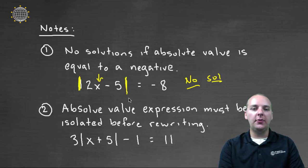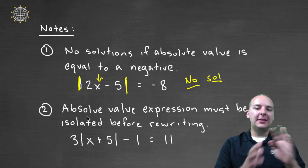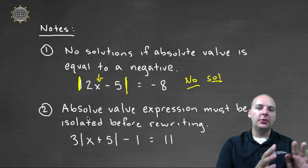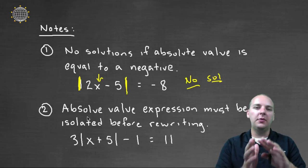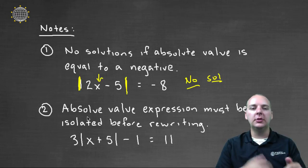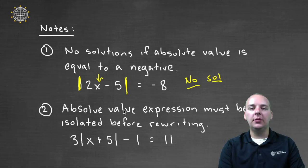And second note, final note: when you do this thing where you set your absolute value equal to the positive of a number and the negative of a number and all those sorts of things, you can't do that until the absolute value expression is isolated.